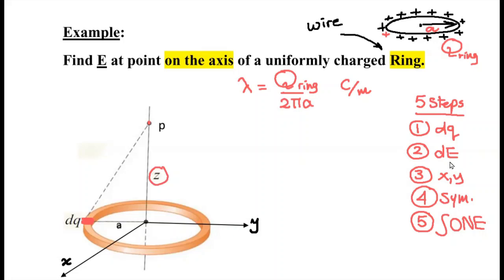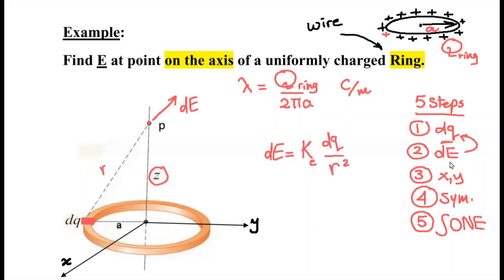Remember the five-step strategy we already discussed in the previous video. I want to choose an element dQ and then find the electric field due to this element dQ. Here is the small segment dQ. I pick this element and draw the electric field vector due to it — I'm going to call it dE. dE can be calculated by the formula similar to the point charge: K_E dQ divided by R squared. R here is the distance between the small element dQ and the point.